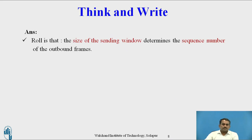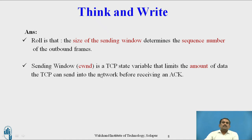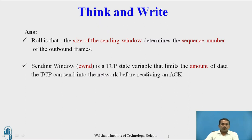The answer is: the role of the Send window is that the size of the Send window determines the sequence number of the outbound frames. Before transmitting any data, the sender's window determines sequence numbers of outbound frames. The sequence number is used to confirm whether all data transmitted from the client side has reached the destination, since TCP is connection-oriented. The Send window — referred to as cwnd — is a TCP state variable that limits the amount of data TCP can send into the network before receiving acknowledgement from the receiver. After sending data, the client must wait for acknowledgement.